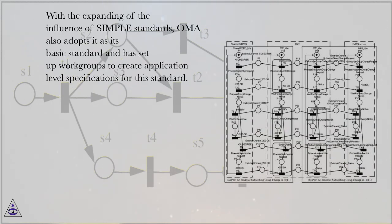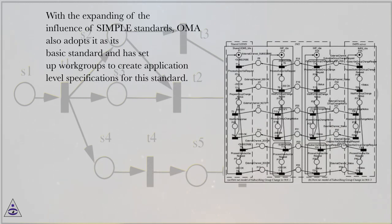3GPP and 3GPP-2 adopt Simple as their basic standard and specify the practical implementations of SIP specifications for the presence, group, and IMP service in IMS and MMD, multimedia domain, respectively. 3GPP 2002–2005, 3GPP-2 2002–2006.